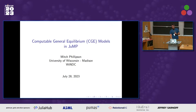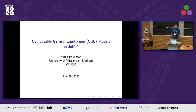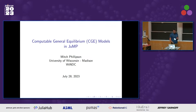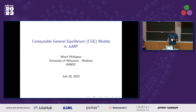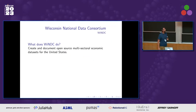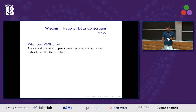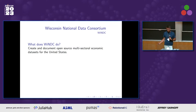Apologies if I sound a little weird — I'm getting over a cold. I'll be talking about computable general equilibrium models and JuMP. It's a little weird because I'm a mathematician talking about economics at a CS conference. I work for the Wisconsin National Data Consortium, WinDC, and what we do is we create open source multi-sectoral economic models from governmental data.